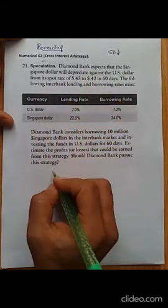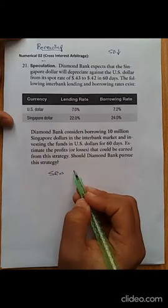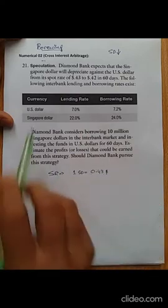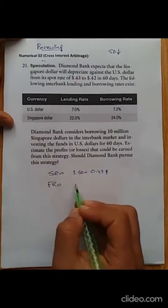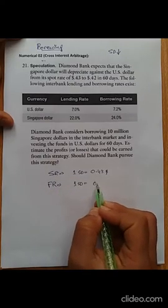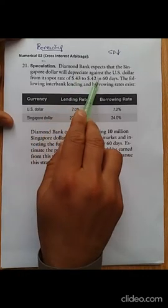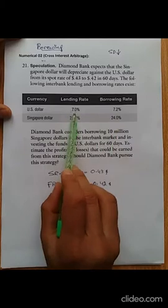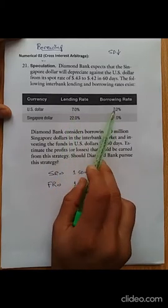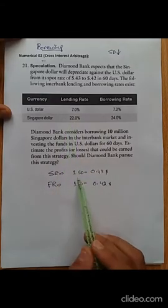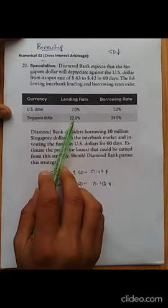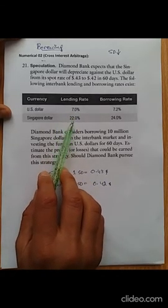Currently, the spot rate is 1 Singapore dollar = 0.43 USD. It is expected that in 60 days, 1 Singapore dollar will equal 0.42 USD. Regarding the interest rates, one issue I notice is that there is a very large difference — 7% versus 22-24%. If you look at the currency values, there is no similarly large difference; it is roughly a two-to-one relationship.